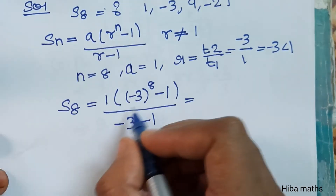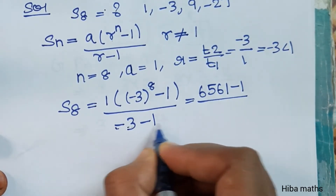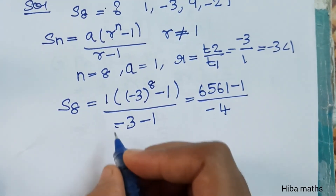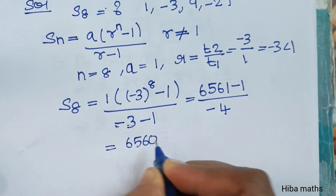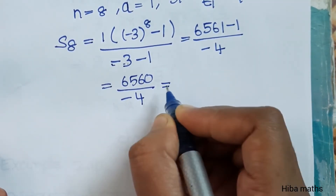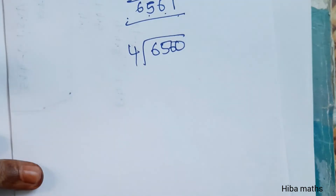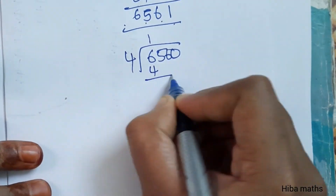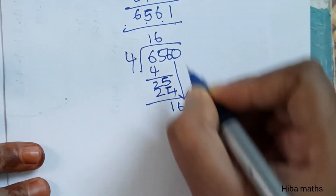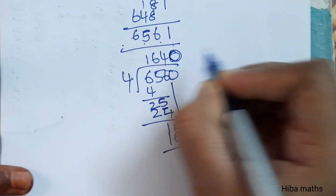So we have 6561 minus 1, which is 6560, divided by 2 — but accounting for the sign, we get 6560 divided by minus 4, giving minus 1640. Therefore, S(8) is equal to minus 1640.